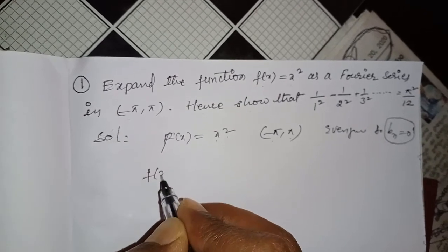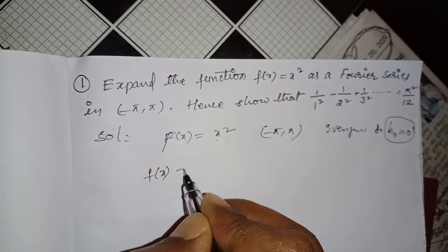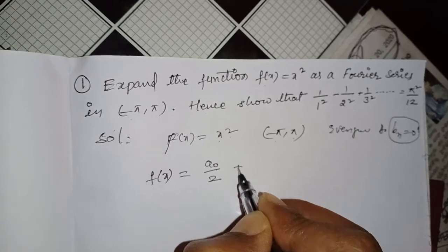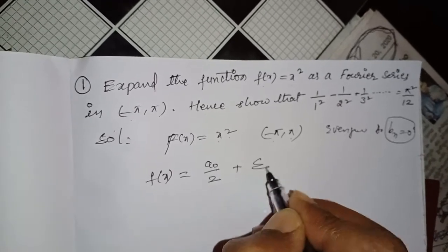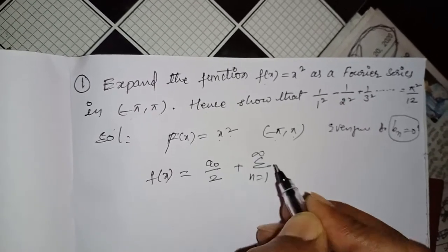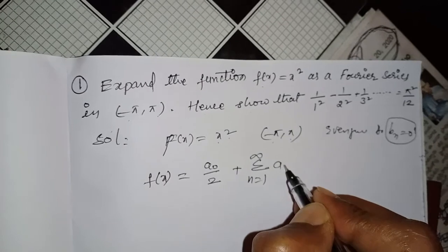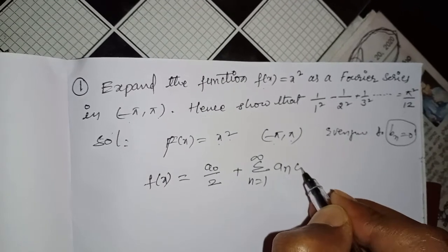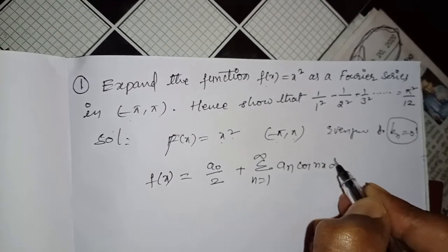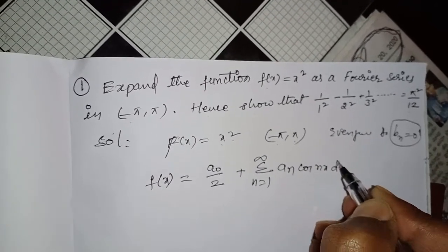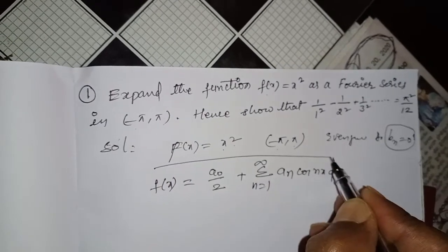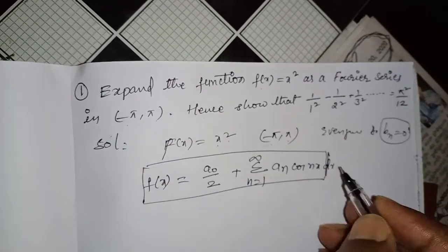The Fourier series formula is f(x) = a0/2 + summation from n=1 to infinity of an·cos(nx). This is the Fourier series formula.